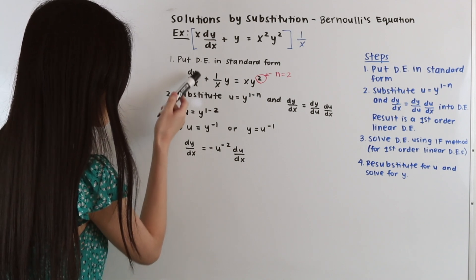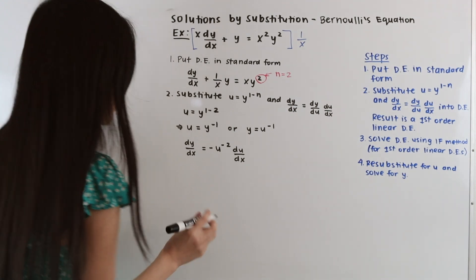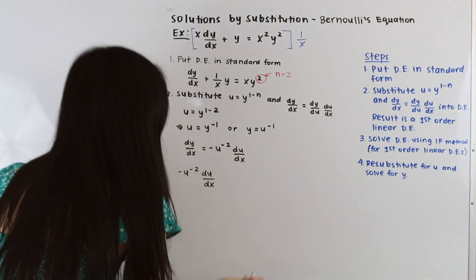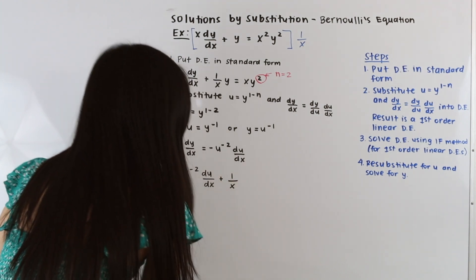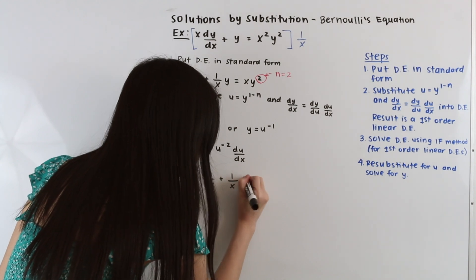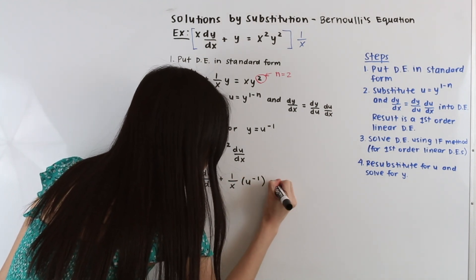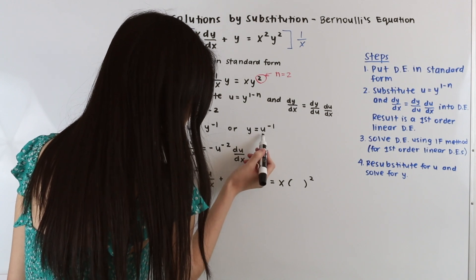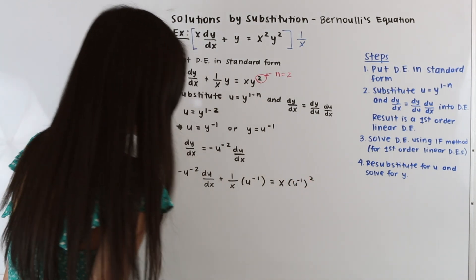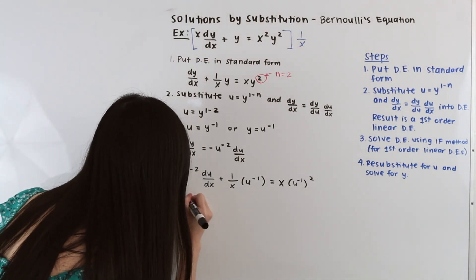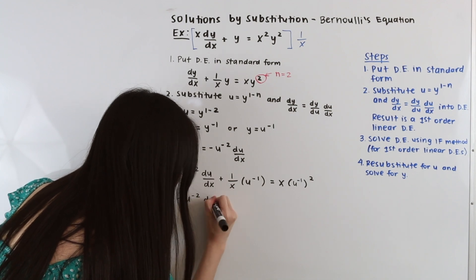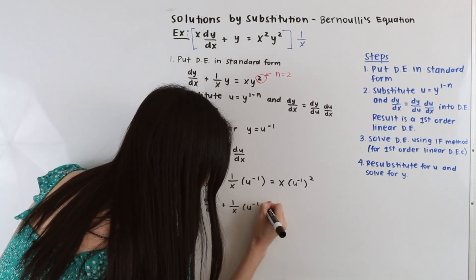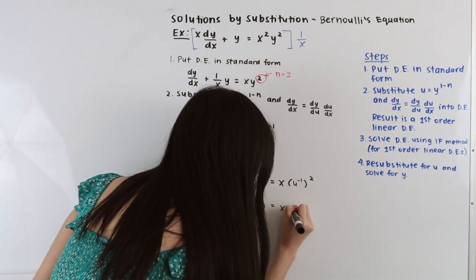Now let's substitute u and dy/dx into our differential equation. Replacing dy/dx with −u^(−2) du/dx and y with u^(−1), we get: −u^(−2) du/dx + (1/x)u^(−1) = x·u^(−2).